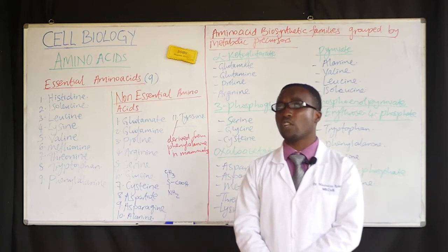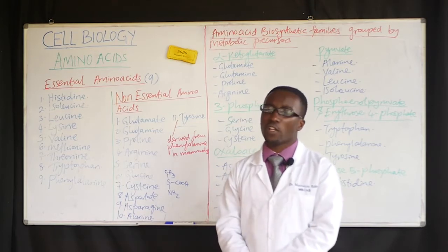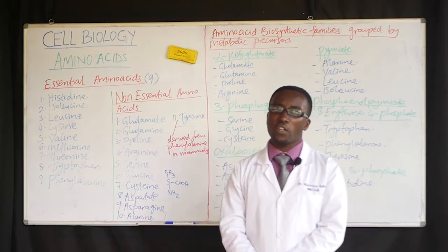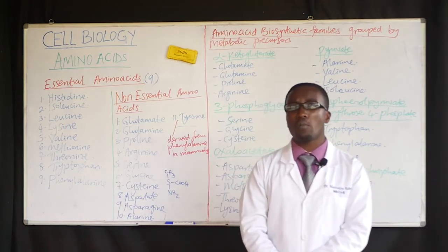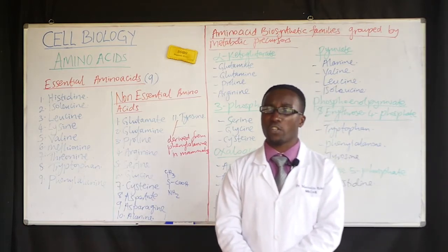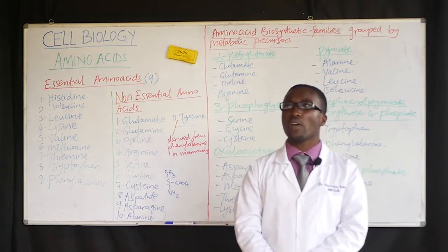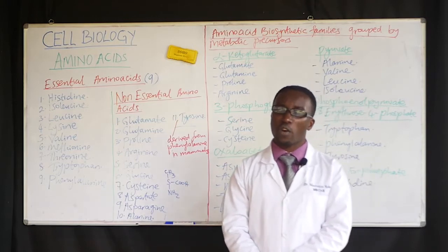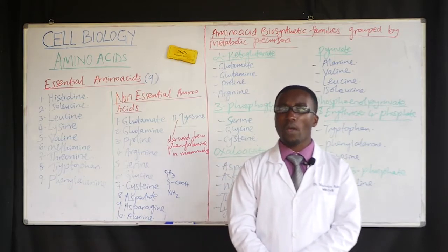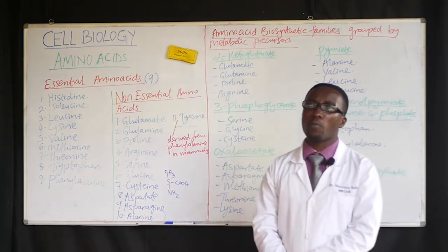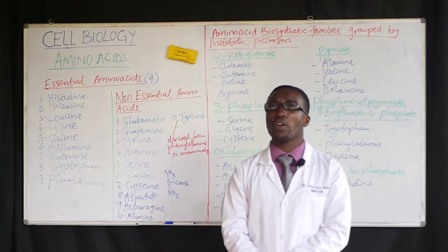Enzymes are proteins in nature. At certain temperatures they are denatured — at low temperatures below the optimum they are inactivated, and at high temperatures above 37–38°C they start undergoing denaturation. From the amino acids, we end up forming proteins.